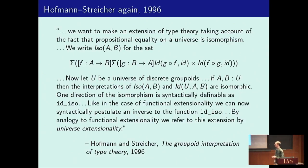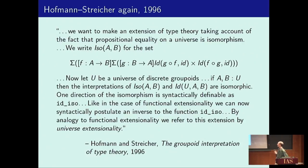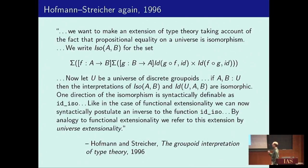The idea of univalence was also floating around already. If you go back to the Hofmann-Streicher paper and look at the very end of it, they suggest making an extension of type theory — adding principles that take account of the fact that propositional equality is isomorphism. This is essentially univalence. They define a type of isomorphisms: a map in both directions, F and G, and then homotopies or equalities relating them to the identity.